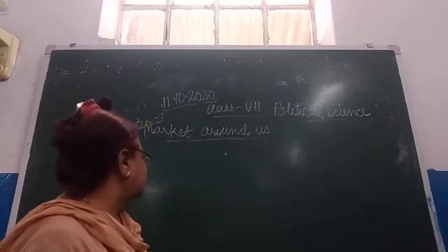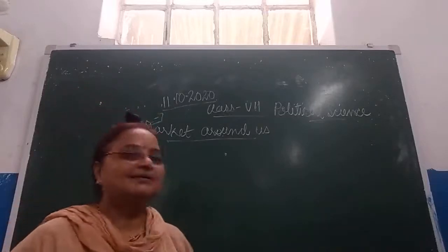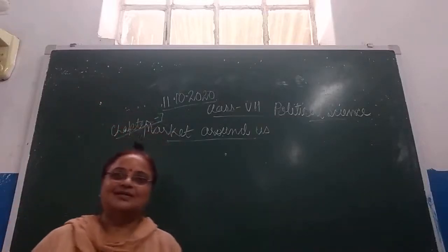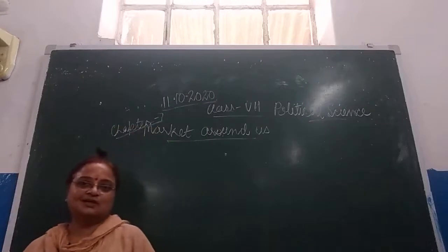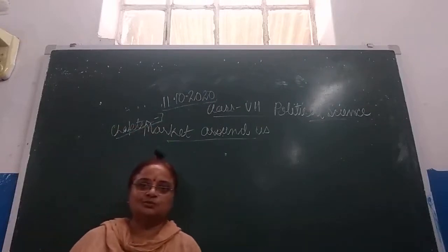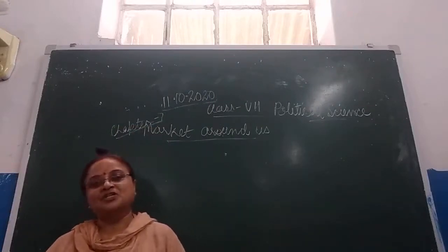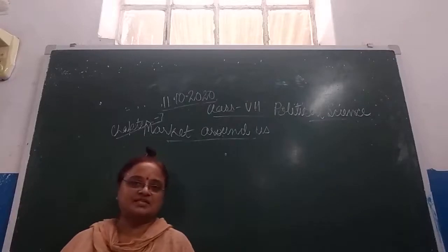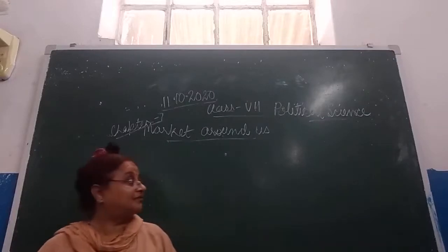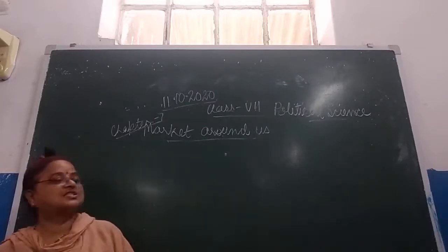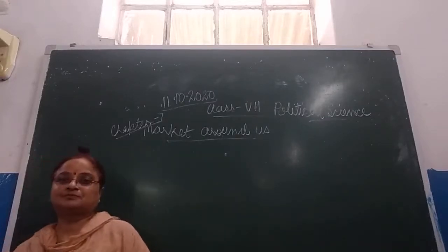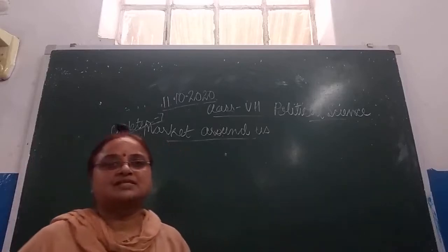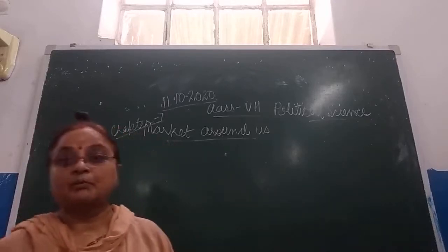Let's begin this chapter in political science — Chapter Seven. Because the other books, history and geography, we have already completed seven chapters. So now here we have Chapter Seven from political science.